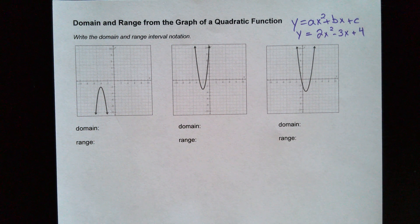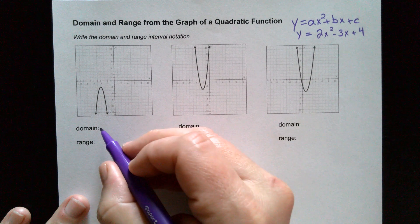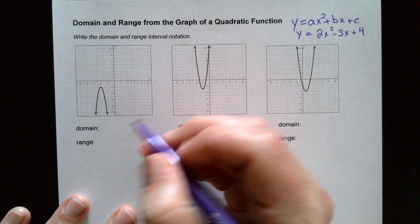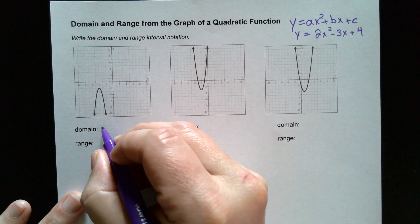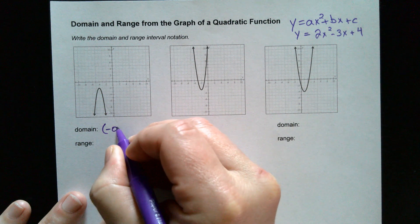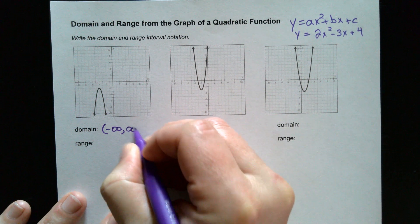You could plug in a zero, you could plug in any negative number, any positive number. There's no number that you cannot plug into a quadratic, which means that your domain of a quadratic function of a parabola is always going to be negative infinity to positive infinity.